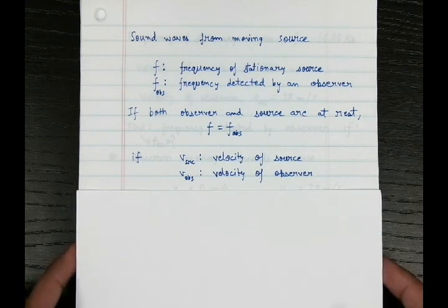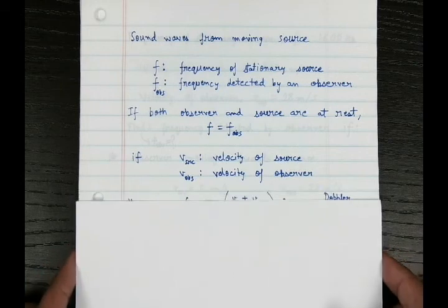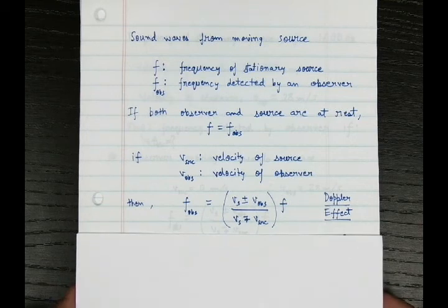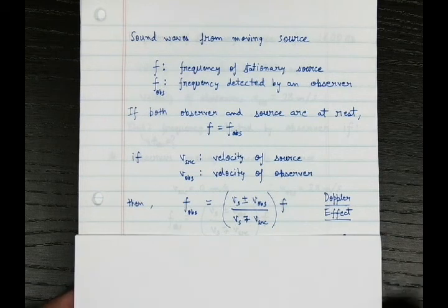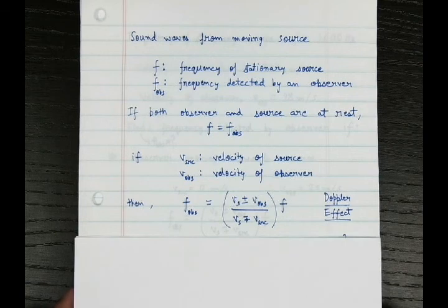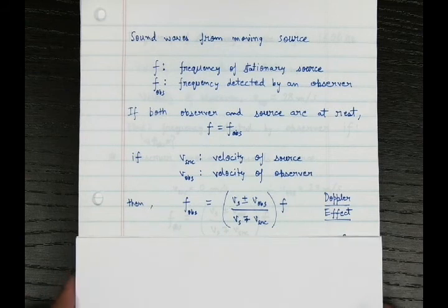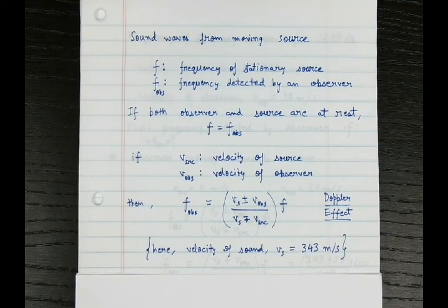Then the frequency being detected changes from the frequency of the stationary source, and it is given by this formula: frequency as detected by the observer equals the speed of sound plus-or-minus velocity of observer, divided by speed of sound minus-or-plus velocity of source, times the frequency of the stationary source. This formula and effect is known as the Doppler effect. The plus-minus depends on the direction the observer and source are moving relative to each other. Here, VS is the velocity of sound, which is 343 meters per second.